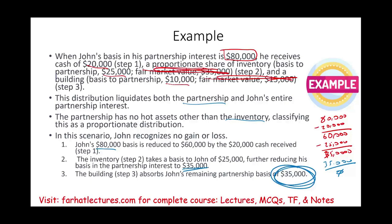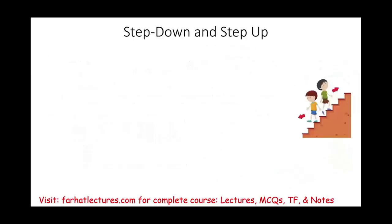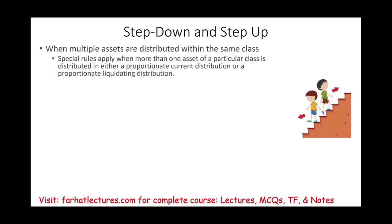That's the logic. Because if we are liquidating, what would John do with the remaining basis if the business doesn't exist? We could also have what's called step-up and step-down basis. When multiple assets are distributed within the same class, special rules may apply.